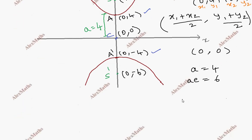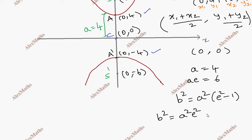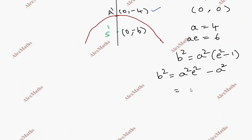Now we apply the b² formula for a hyperbola: b² = a²e² - a². Substituting: ae = 6, so (ae)² = 36, and a² = 16. Therefore b² = 36 - 16 = 20.